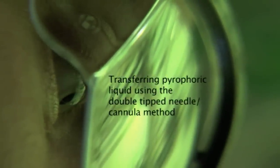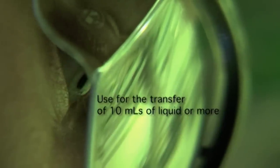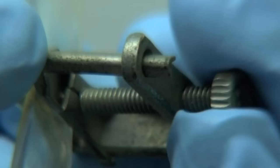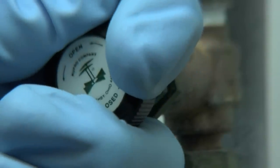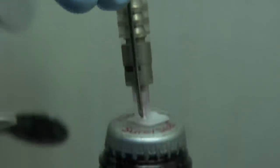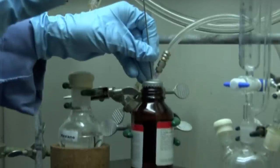Dustin will now demonstrate the second method for transferring pyrophoric liquid by using the double tip needle or cannula. This technique should always be used when transferring 10 ml or more. First, pressurize the SureSeal bottle with nitrogen. Then insert one end of the double tip needle through the septum and into the headspace above the reagent. Nitrogen will start passing through the needle.